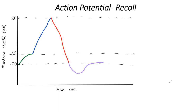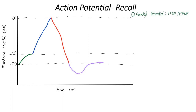Let's start with that first phase where we have graded potentials. The first phase is where we've got graded potentials that could possibly bring us closer to our threshold value. These are a sequence of IPSPs — inhibitory post-synaptic potentials — as well as excitatory post-synaptic potentials. These are different types of graded potentials, and depending on what we get, this can bring the membrane potential closer to negative 55.